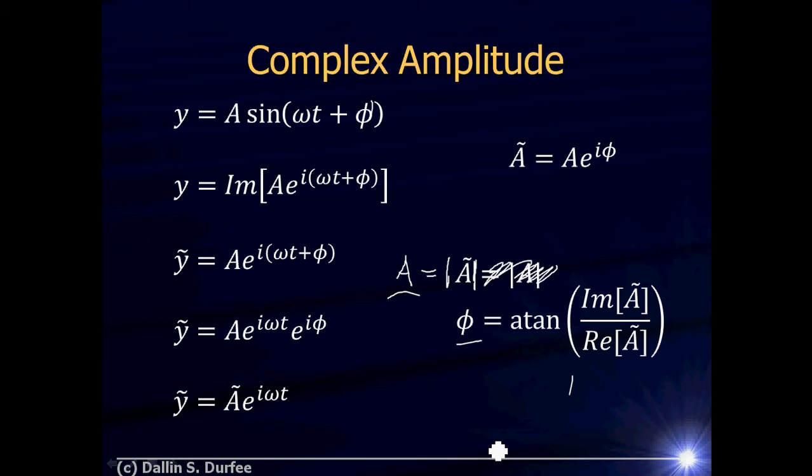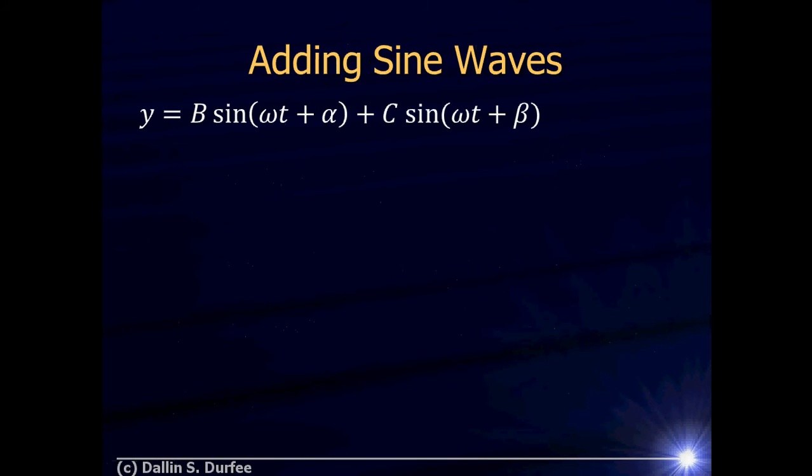Now that we understand the complex amplitude, let's see how we can use complex exponentials to add two sine waves. So imagine I have two sine waves on a string. Imagine I'm looking at some point on the string, and I have a wave going one way with some amplitude and a wave going the other way at some amplitude. If I look at that particular point on the string, what's happening there is the sum of what both of those waves are doing to that point.